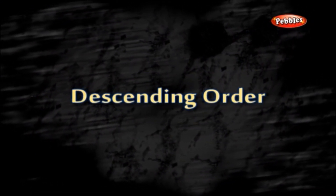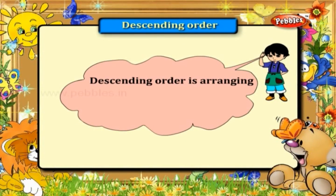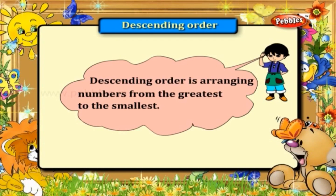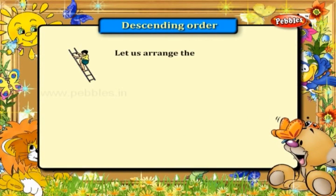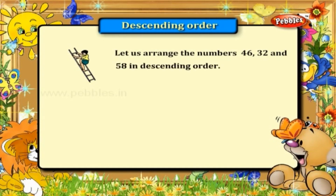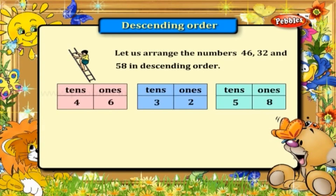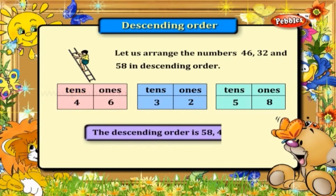Descending order is arranging numbers from the greatest to the smallest. Let us arrange the numbers 46, 32, and 58 in descending order. By comparing the numbers in the tens place, we get 58, 46, and 32.